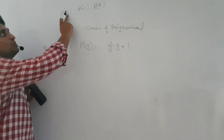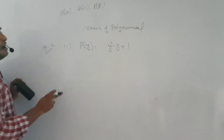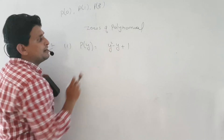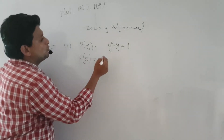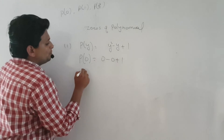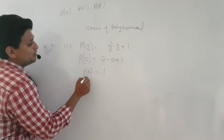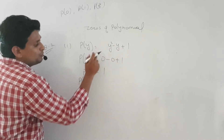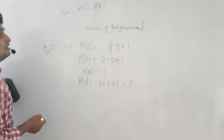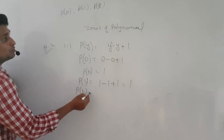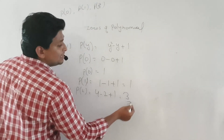For p(0): put y equal to 0, giving 0 minus 0 plus 1, so p(0) equals 1. For p(1): put y equal to 1, giving 1 squared minus 1 plus 1, that is 1 minus 1 plus 1 equals 1. For p(2): put y equal to 2, giving 2 squared minus 2 plus 1, that is 4 minus 2 plus 1 equals 3. This is your answer.